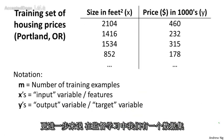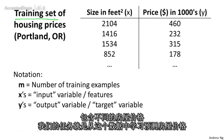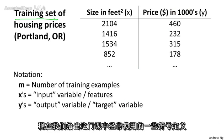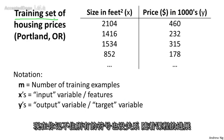More formally, in supervised learning we have a data set, and this data set is called a training set. So for housing prices, for example, we have a training set of different housing prices, and our job is to learn from this data how to predict the prices of houses. Let's define some notation that we'll use throughout this course. We're going to define quite a lot of symbols — it's okay if you don't remember all of them right now, but as the course progresses it will be useful to have a convenient notation.